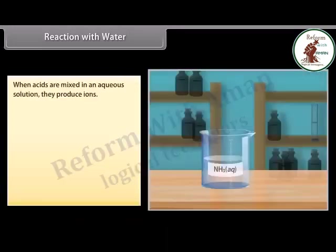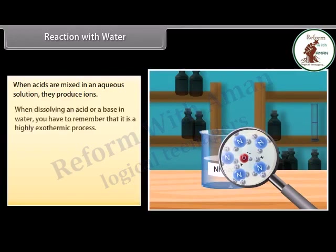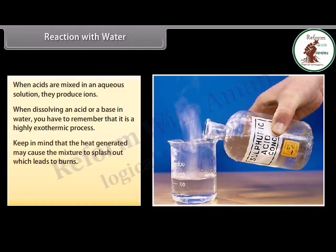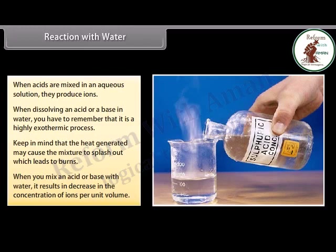Reaction with water: when acids are mixed in an aqueous solution, they produce ions. When dissolving an acid or a base in water, remember that it is a highly exothermic process. While adding water to a concentrated acid, the heat generated may cause the mixture to splash out, leading to burns, and may cause the glass container to break due to excessive local heating. When you mix an acid or base with water, it results in a decrease in the concentration of ions per unit volume — this process is called dilution, and you get a diluted acid or base.